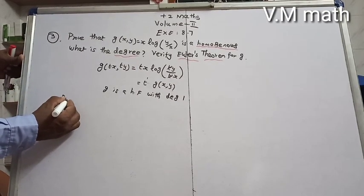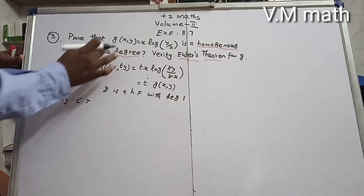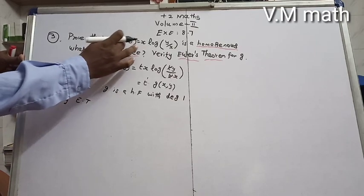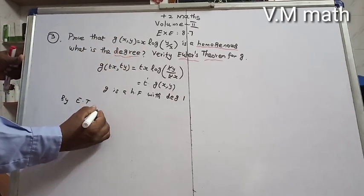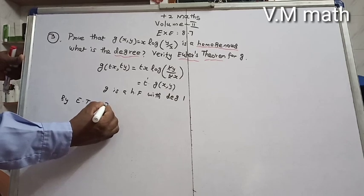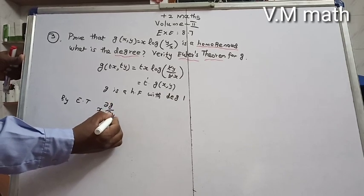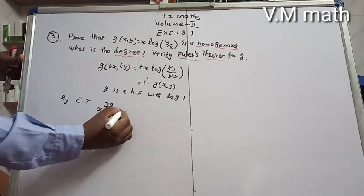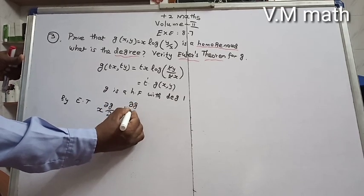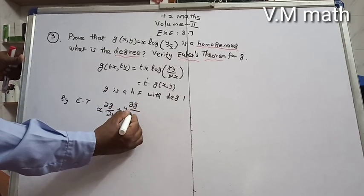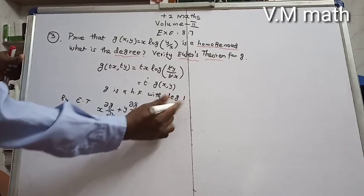By Euler's theorem, for a homogeneous function g of two variables x and y, we have x·∂g/∂x + y·∂g/∂y = n·g, where n is the degree. Here degree is 1, so x·∂g/∂x + y·∂g/∂y = g.